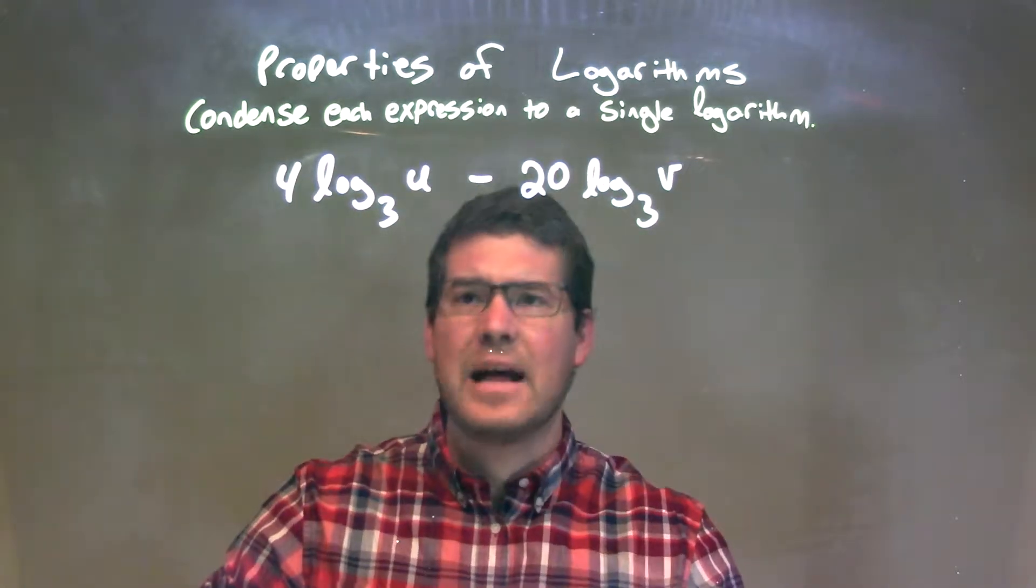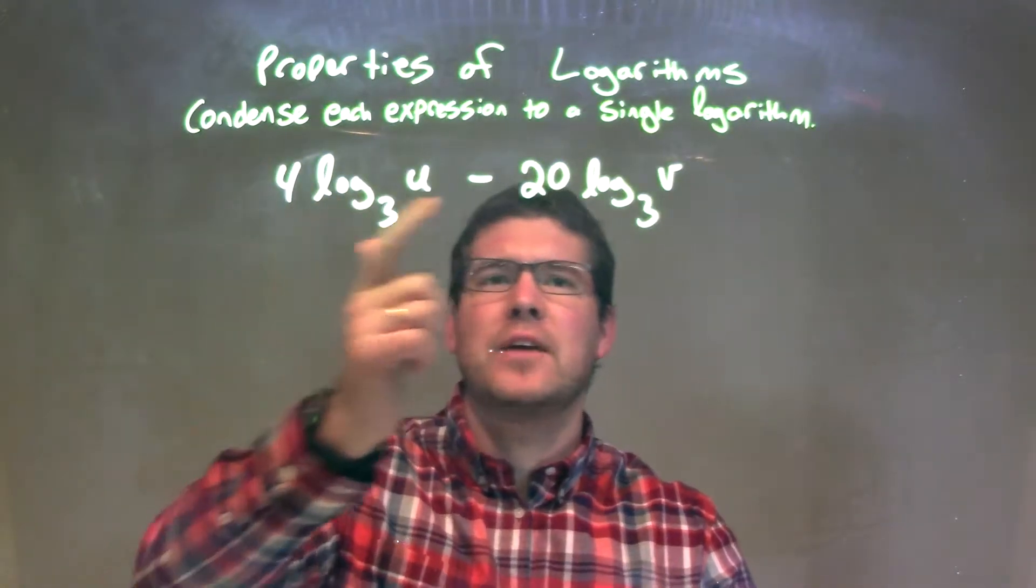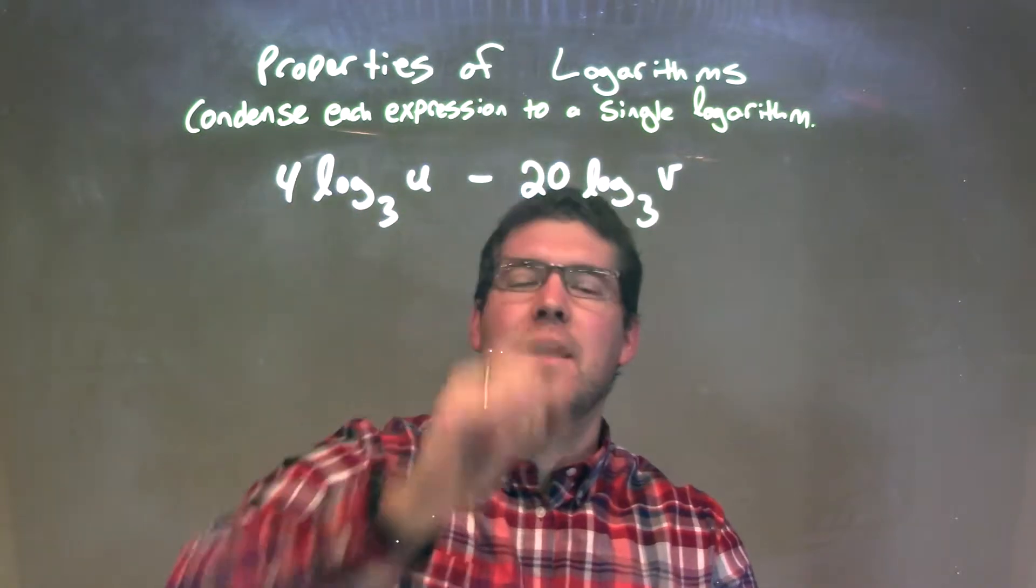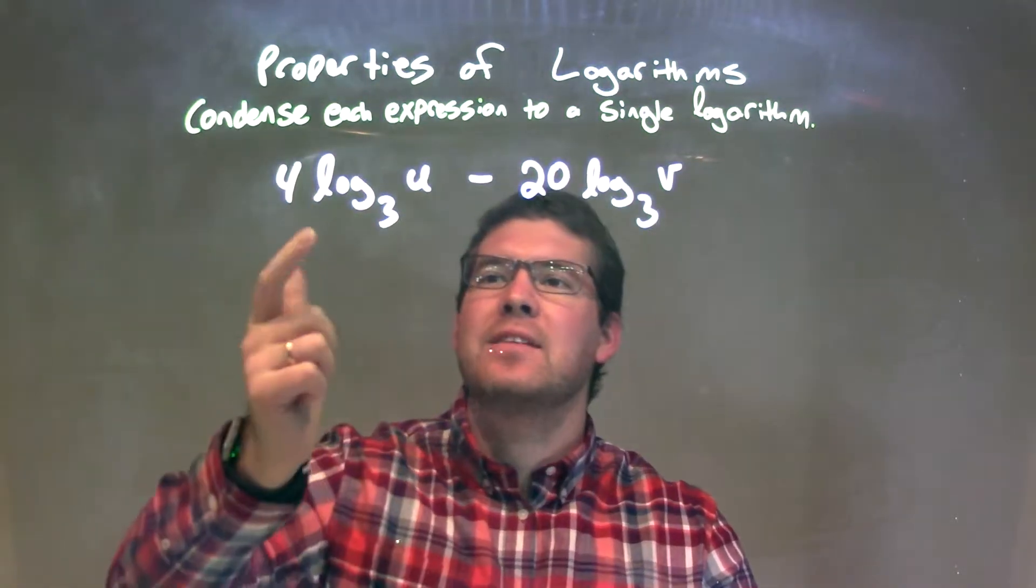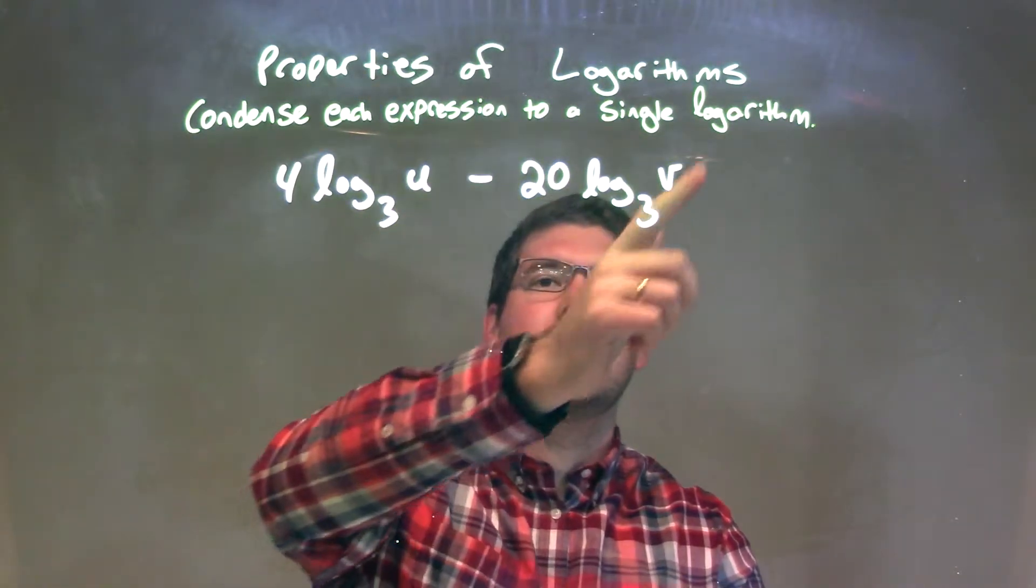Well, if you want to condense this, I'm looking right in front of each one of these logs. I have 4 and the 20, right? I can write that as the exponent of u to the 4th power and v to the 20th power.